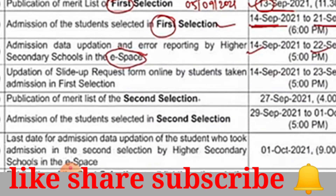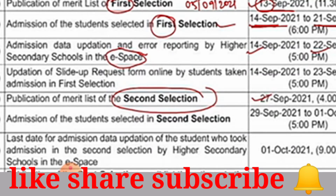The second selection of Plus Two Admission is done in September to October.